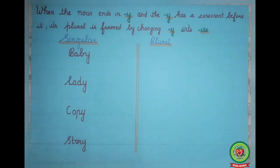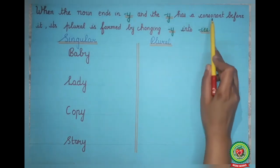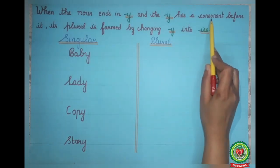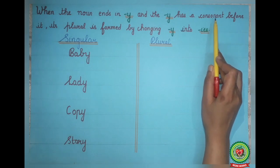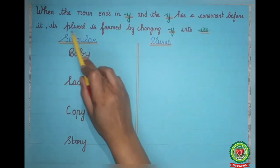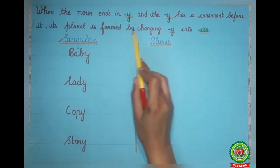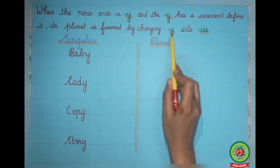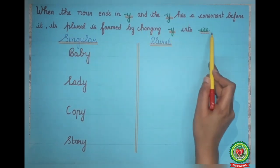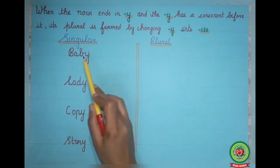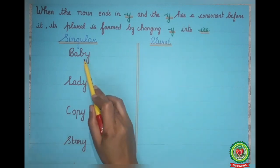When the noun ends in Y and the Y has a consonant — that is, alphabets like D, C, F, G, etc. — before it, its plural is formed by changing Y into IES. Let us discuss some examples.